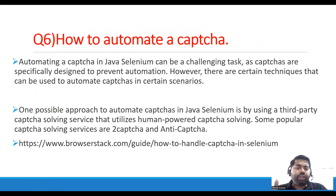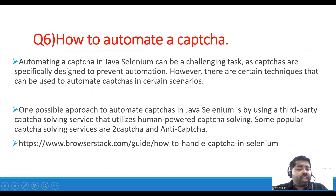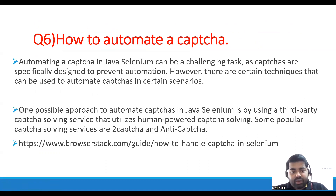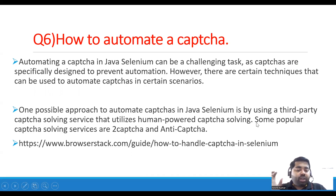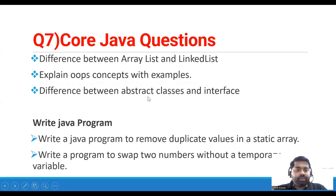How to automate CAPTCHA: automating CAPTCHA in Java Selenium is a challenging task since CAPTCHAs are specifically designed to prevent automation. However, certain techniques exist. One approach is using third-party CAPTCHA-solving services that utilize human-powered solving — popular services include 2Captcha and Anti-Captcha. A link will be shared with practical code examples for automating CAPTCHA.